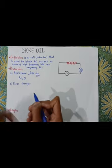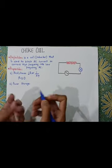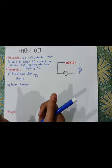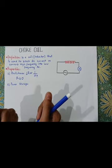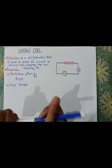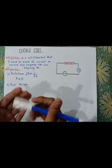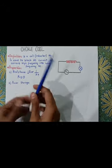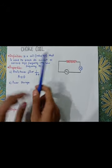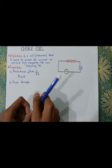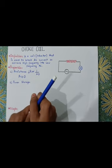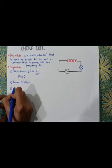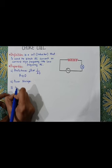The second property is power storage. Choke coil is an inductor, so the power is not lost but stored within itself. When power is provided back to the circuit, the choke coil returns the stored power back to the circuit.